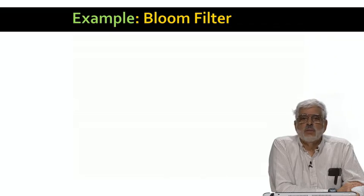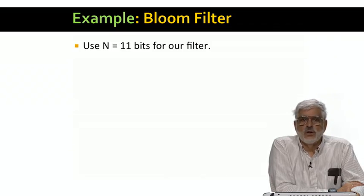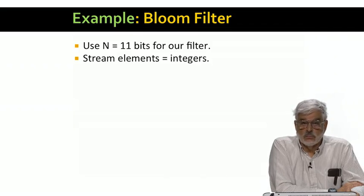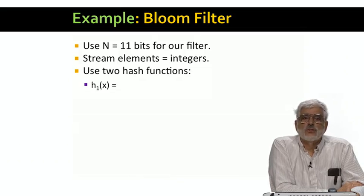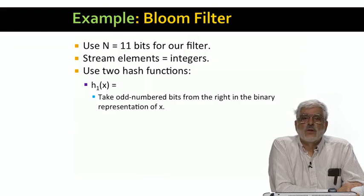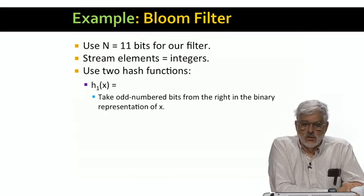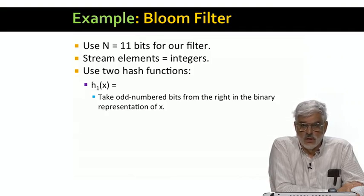Here's a tiny example of how a Bloom filter works. We're going to use an array of 11 bits. We'll assume the stream consists of integers. And we'll have two hash functions. The first, h1, is computed from an integer x as follows. We're going to write x in binary. For h1, we use only the odd positions, counting them from the right. That is, we get position 1 is the low order bit, position 3 is the 4th place, position 5 is the 16th place, and so on.